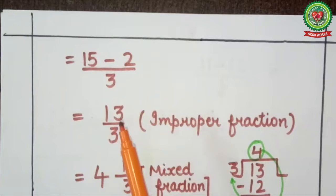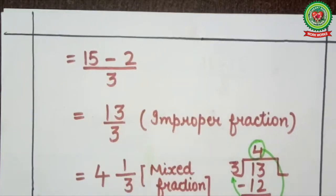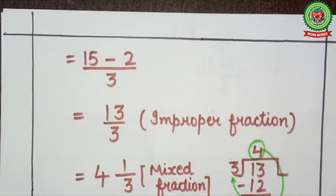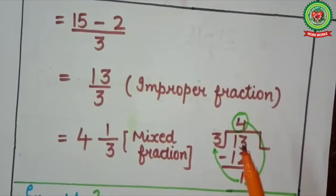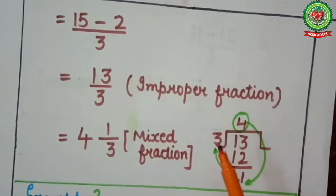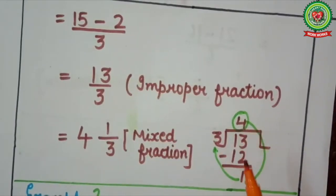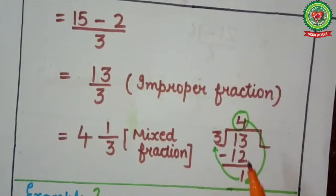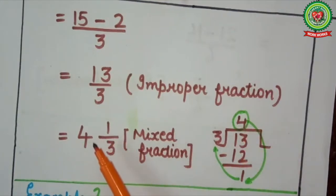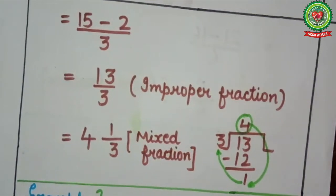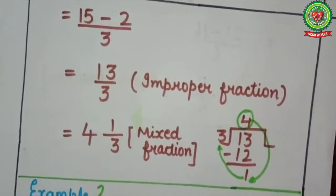As you can see, the numerator is greater than the denominator, so it is an improper fraction. Now divide and change it into a mixed fraction. So here we will divide 13 by 3. It will go on 4. Here it will come 12, minus 1 remainder. Starting from the quotient, it will come 4 whole number 1 upon 3, which is a mixed fraction.